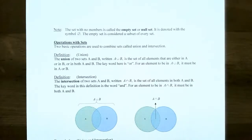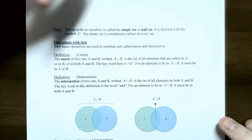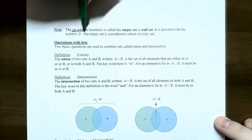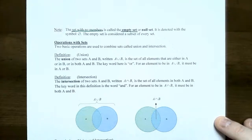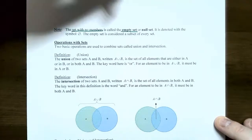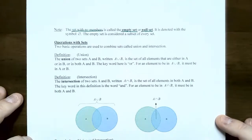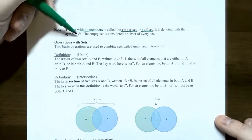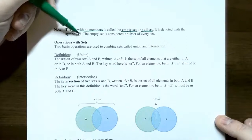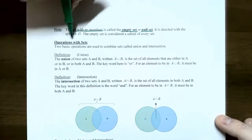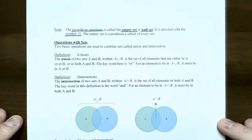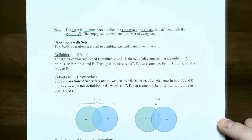There is one special set that contains no elements. A set with no members in it is called the empty set or the null set. It has a special notation — it's a circle with a slash through it. One common property of the empty set is that it is considered a subset of any set you can think of.